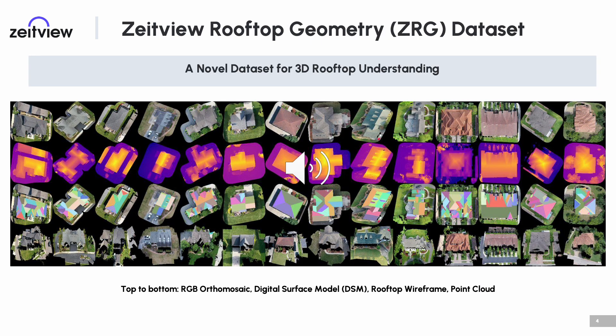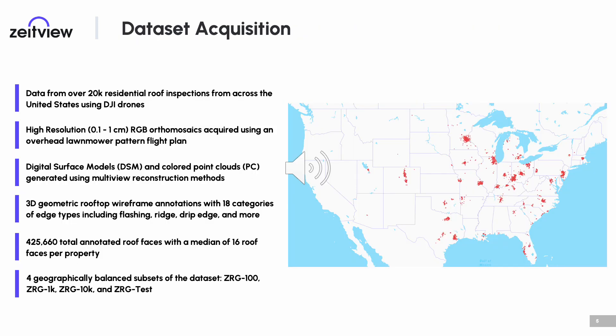To solve this problem, we present the ZiteView Rooftop Geometry Dataset, or ZRG for short. ZRG is a novel dataset containing multiple modalities and annotations for complete 2D and 3D residential rooftop structure understanding. The dataset is composed of data from over 20,000 residential roof inspections across the United States. The modalities it includes are high-resolution RGB orthomosaics, digital surface models, and colored point clouds.